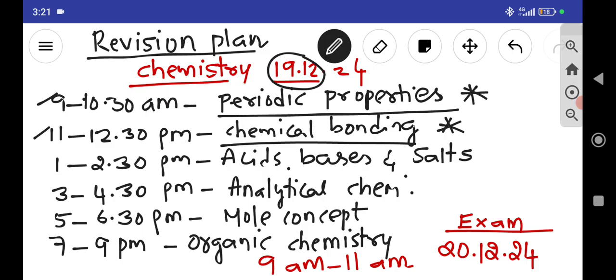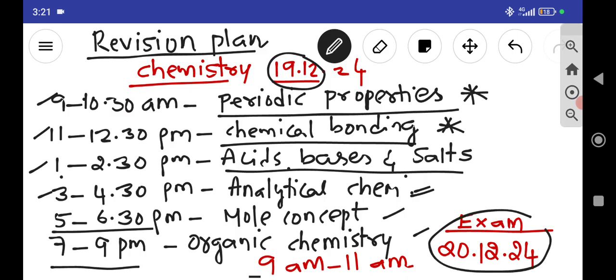Take half an hour break in between each schedule. Like 1 to 2:30 you have acid bases and salts, then take break here. Then again 3 to 4:30 analytical chemistry, 5 to 6:30 you have mole concepts, and 7 to 9 PM organic chemistry you can revise. Next day you can write an exam between 9 to 11 AM. This is for chemistry. Similarly you can follow for the other subjects.